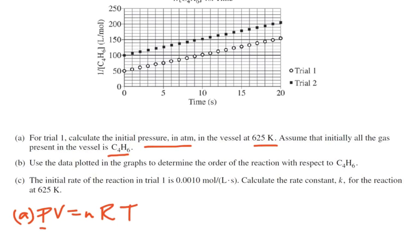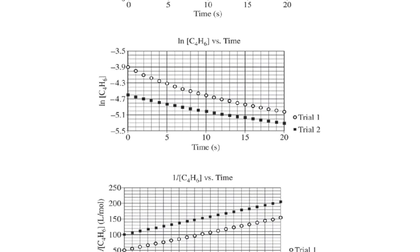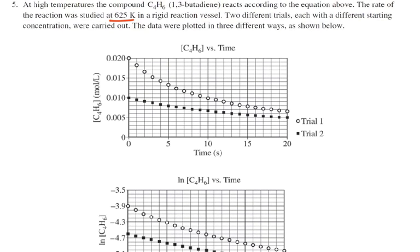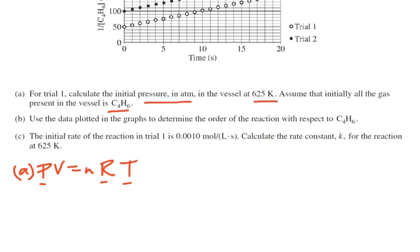Okay, we're looking for the pressure. We certainly know R, we know the temperature. It's this n and V here that are a little troublesome. And what we have to do is go back here and say initially the concentration is 0.020 molar—moles per liter. And so we can think that and turn that into two things.